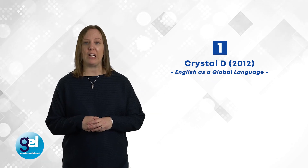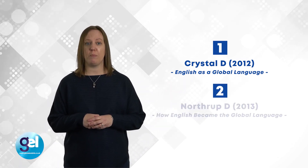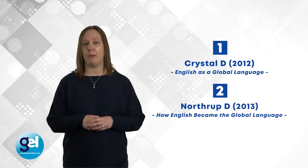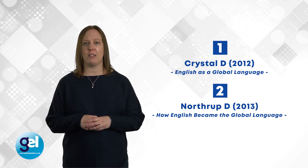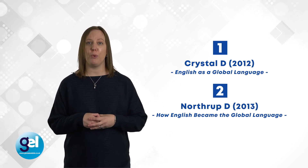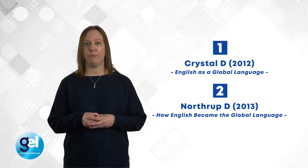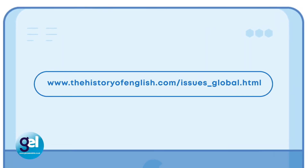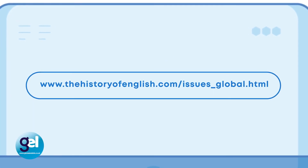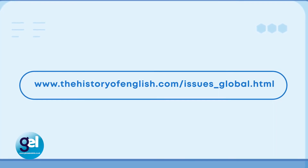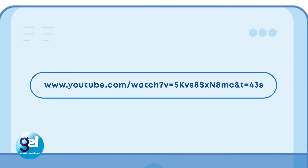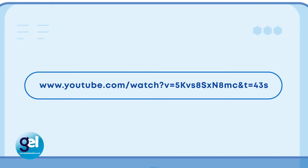For further consolidation, there are some recommended books. The first author is David Crystal with his book 'English as a Global Language'. The second recommendation is Dee Northrup's 'How English Became the Global Language'. It is always recommended to do as much reading as possible around the topic to help with understanding and assessments. There are also links below: the first is a history of English resource, and the second is a YouTube video with short, funny videos related to why English has become a global language.